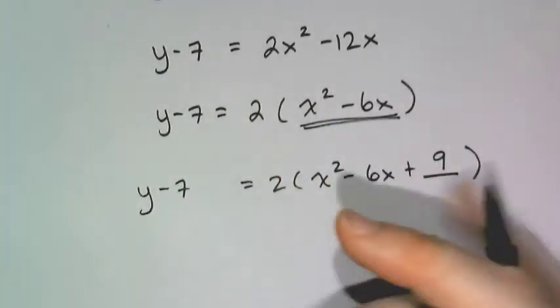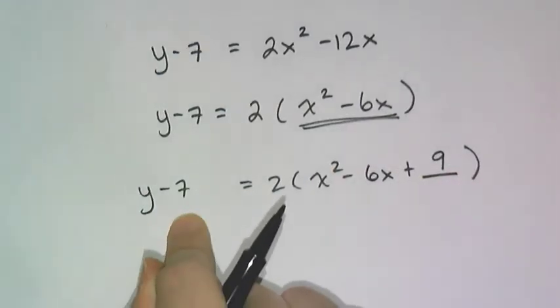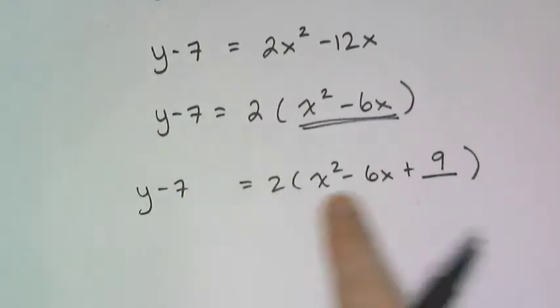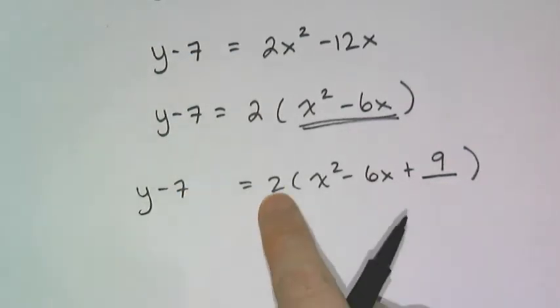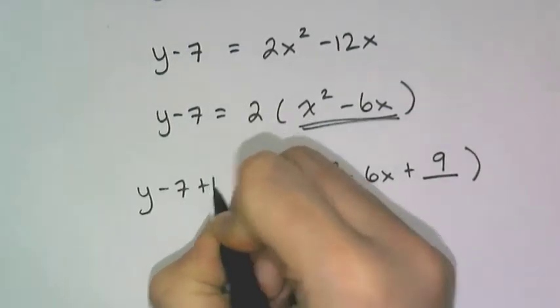Now I have to add the same quantity to both sides. So do I add 9 to this side? Well if I think about it, is this really a 9 or was it 2 times 9 or 18? Well it's an 18, so I'm going to add 18 to both sides.